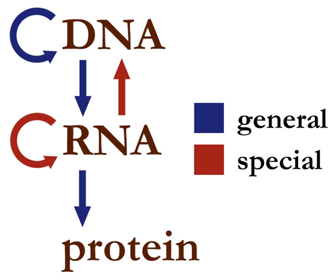It was first stated by Francis Crick in 1957, then published in 1958, and restated in a Nature paper published in 1970. A second version of the central dogma is popular but incorrect. This is the simplistic DNA-RNA protein pathway published by James Watson in the first edition of The Molecular Biology of the Gene. Watson's version differs from Crick's because Watson describes the two-step DNA-RNA and RNA-protein pathway as the central dogma. While the dogma as originally stated by Crick remains valid today, Watson's version does not.